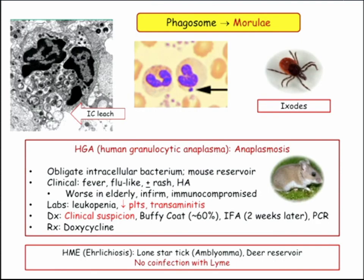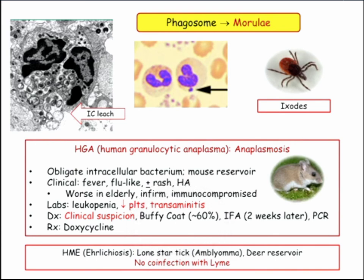This is a summary on anaplasma. They talk about Buffy coat — clinical suspicion is how you approach these patients. Buffy coat: spin it down, get the white cells, and you look at the white cells for morulae. Morulae are present in as much as 80% of infections, so that's not a bogus finding — it's real. High index of suspicion.